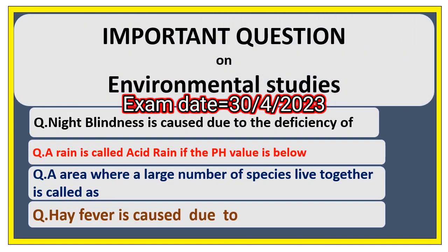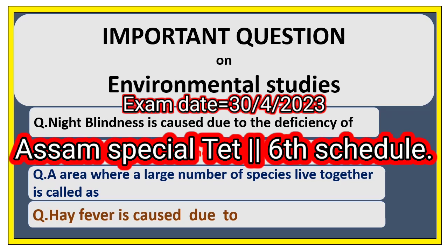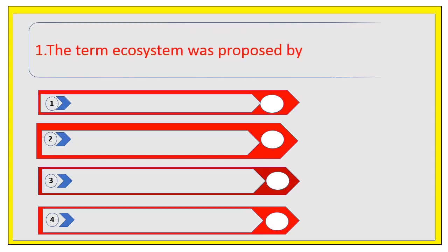Hello people, let's discuss important questions on environmental science. We'll start with question number one: the term ecosystem was proposed by. Options are AG Tansley, Gwilford, Herbert, and Lenin Tansley. The right answer is AG Tansley.